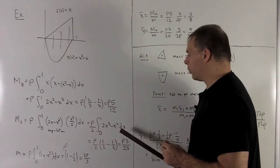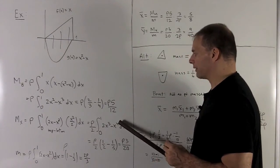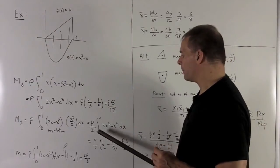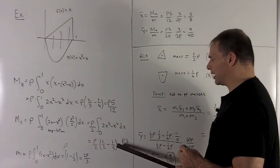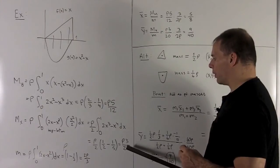When we figure that out, we're going to wind up with a 2x cubed minus an x to the fourth, bring the half out in front, follow your nose, and then that's going to give us 3 rho over 20.